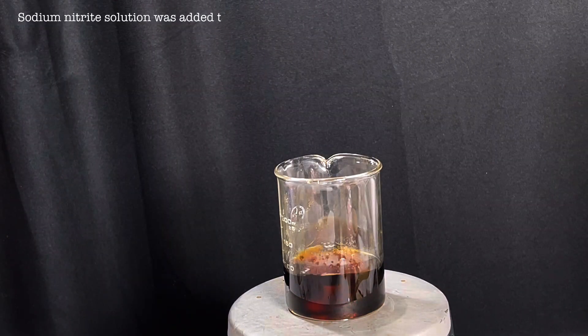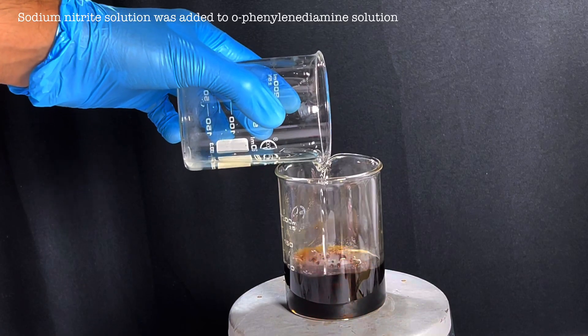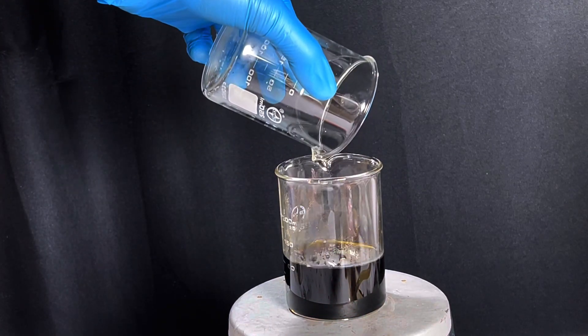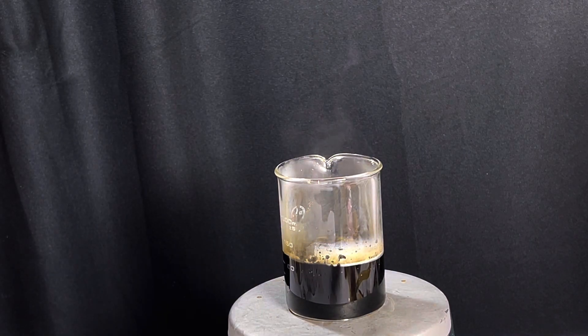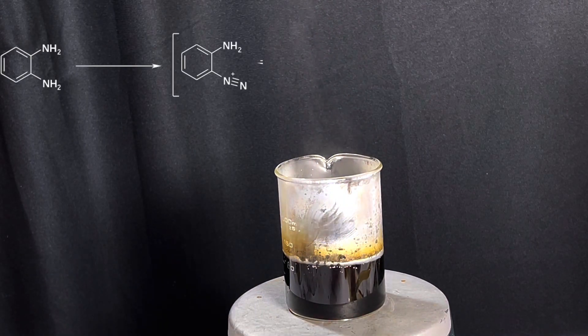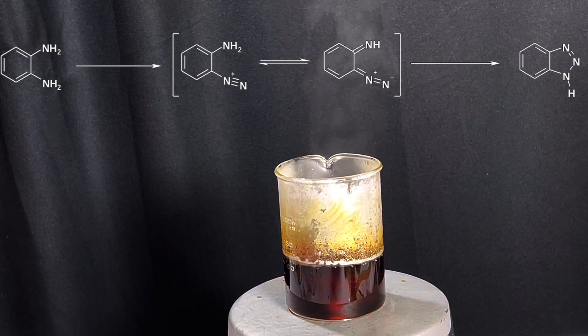Then with stirring turned on in the previous beaker, sodium nitrite solution was added to it in one portion. Immediately an exothermic reaction takes place and the temperature spikes to around 80 degrees C. You can also notice that the color of the solution turns to a brighter shade.